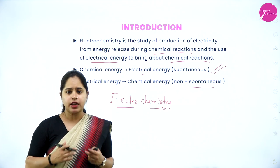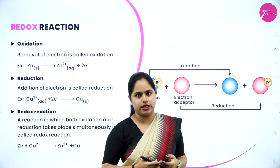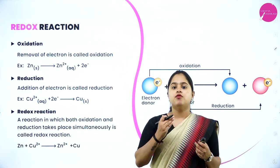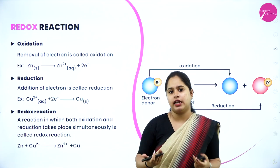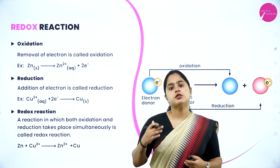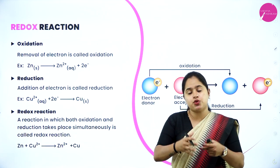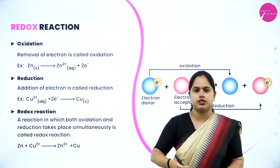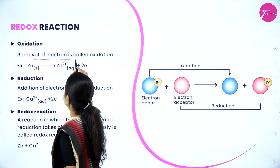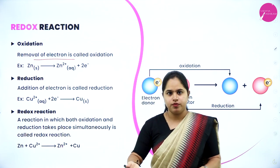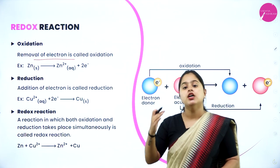The introduction to electrochemistry is clear. In this chapter, all reactions you study are based on redox reactions. Redox reactions — do you remember? When oxidation and reduction happen together, that is simultaneously, we call them redox reactions. Oxidation is the removal of electrons from an atom or ion.